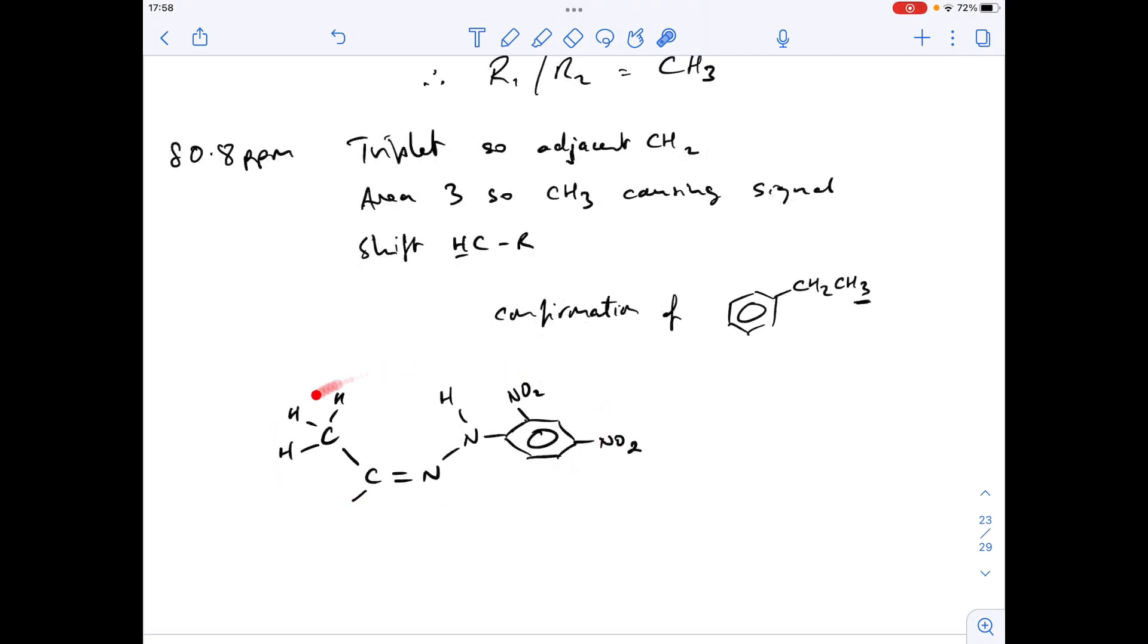Okay, so this is the structure, partial structure anyway, that I'm very confident about. And we know that we've got a total of 14 carbon environments in the molecule from the carbon-13 NMR. So how many have we got in the bit we definitely know about? Well, 6, 7, 8. So we need another 6 carbon environments.